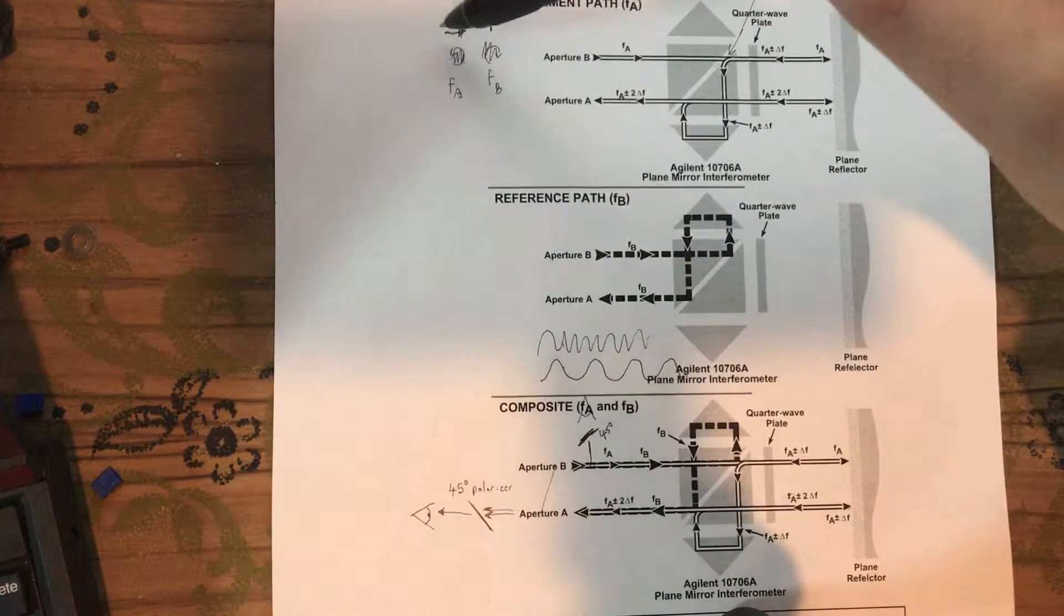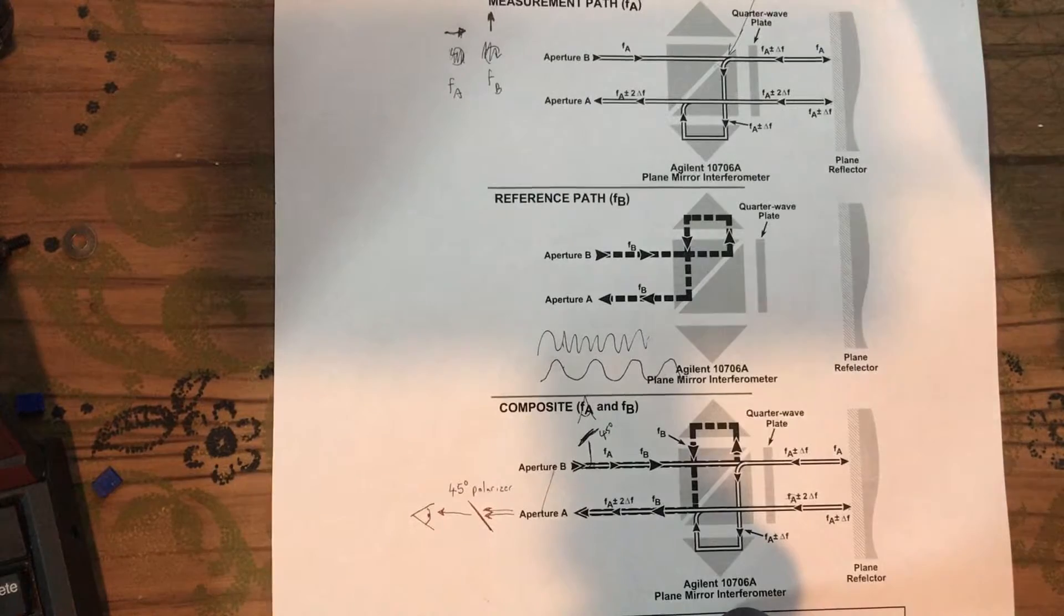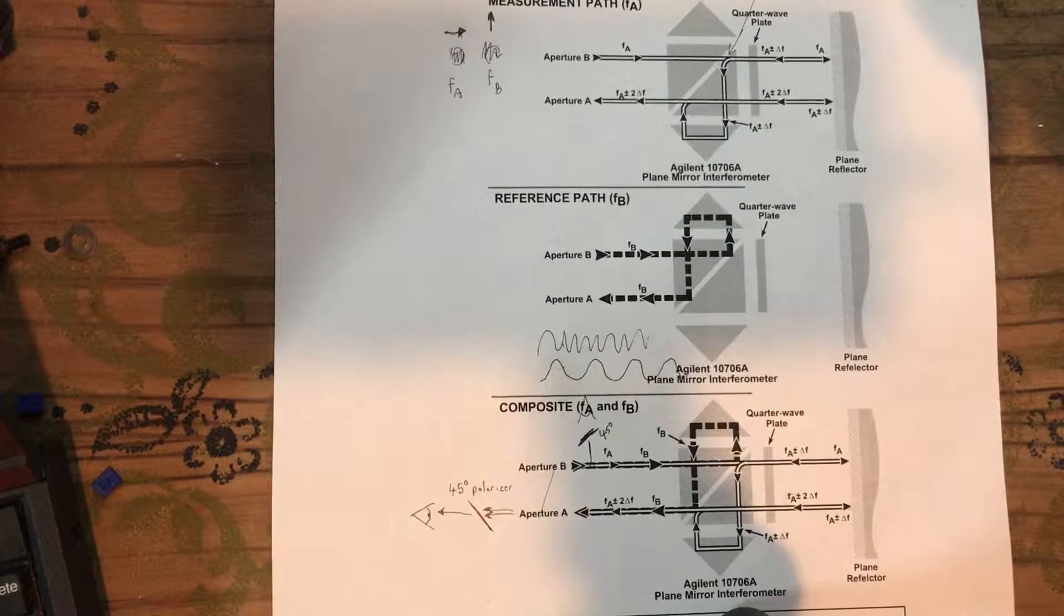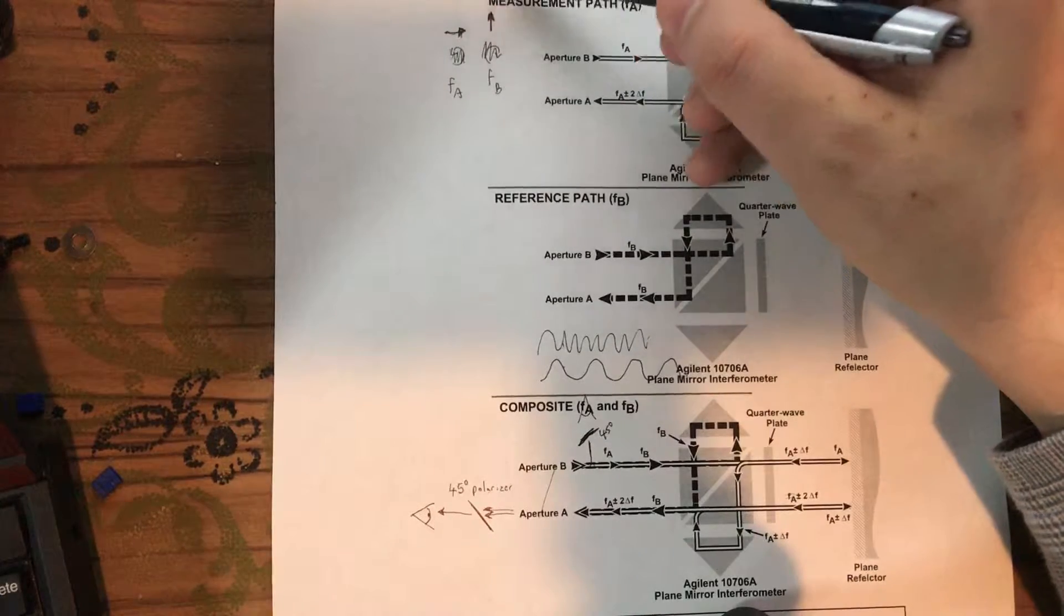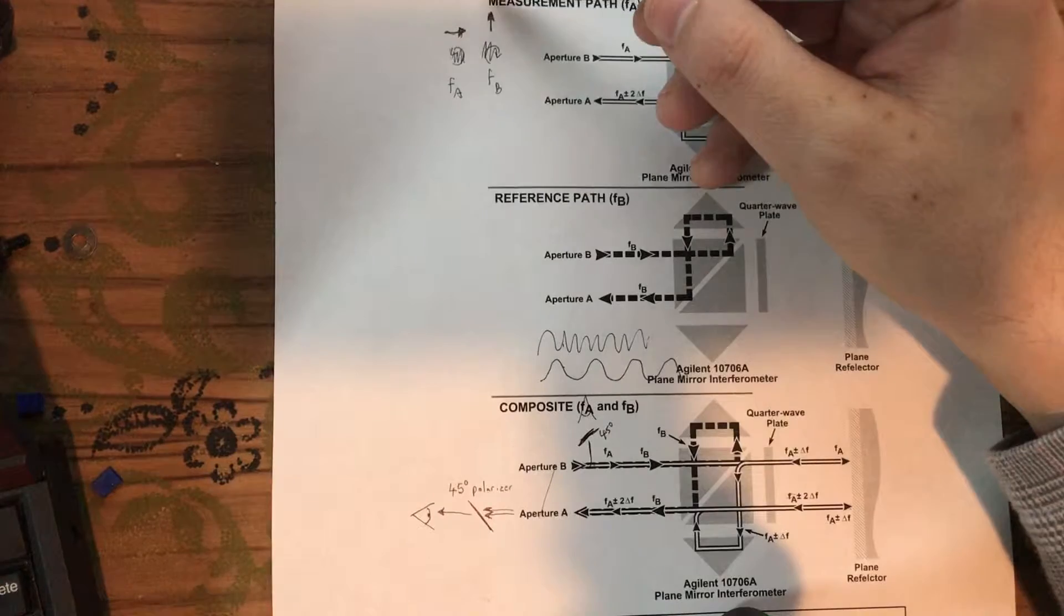First of all, you have this laser head. The laser head is not a normal laser head - it's a helium neon laser head which uses a Zeeman effect to generate two separate frequencies of light at the same time. These two frequencies are very nearly the same but they're a tiny bit different, about two megahertz apart.